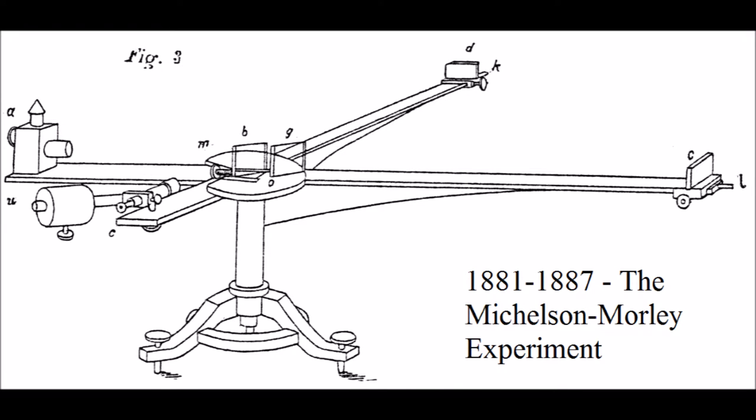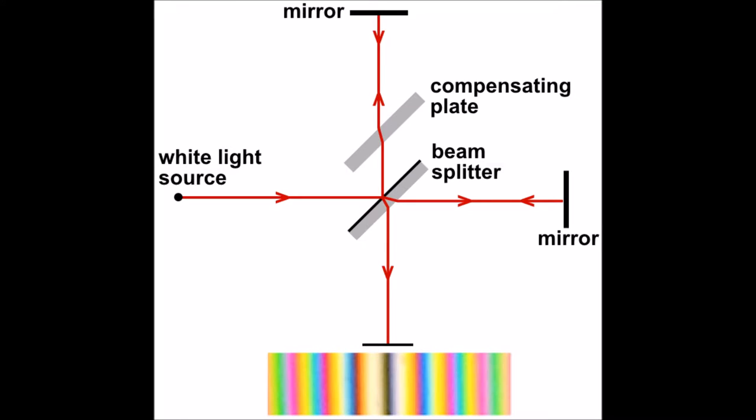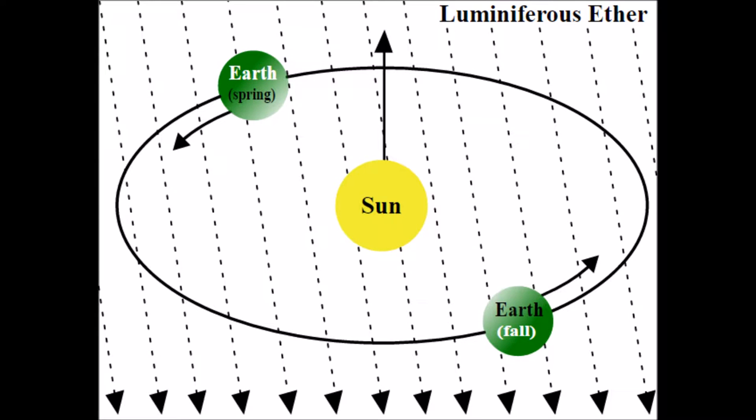With the seemingly positive results of the Fizeau experiment, through the years of 1881 to 1887, Albert Michelson and Edward Morley created the Michelson interferometer to test the existence of ether, a medium through which electromagnetic waves propagate to obtain their wave-like characteristics.